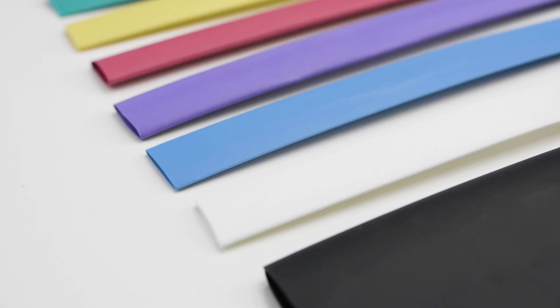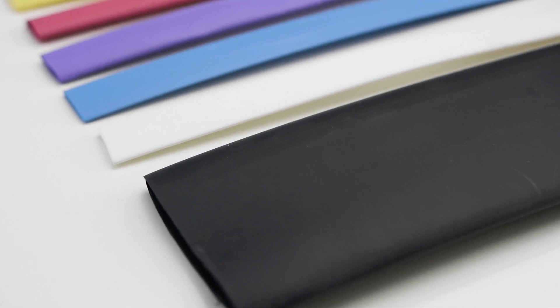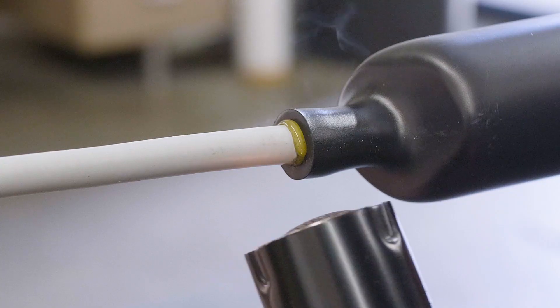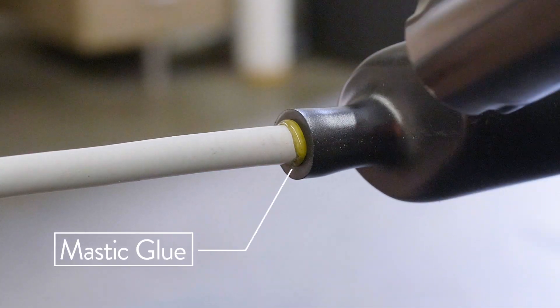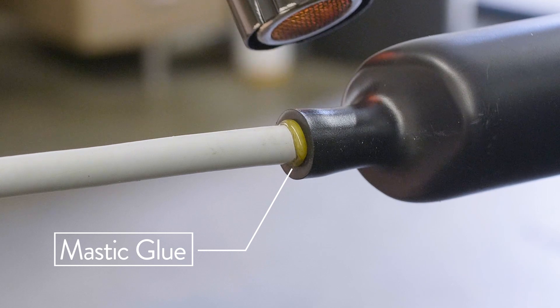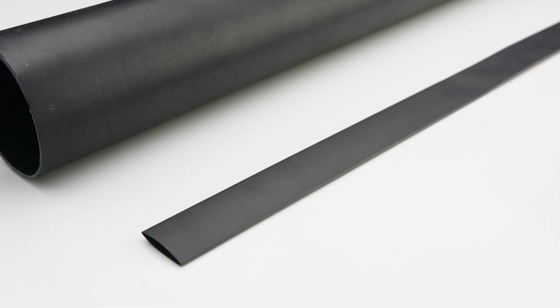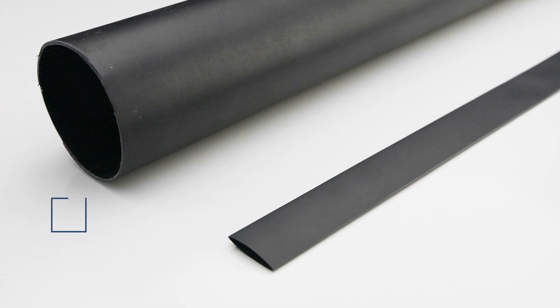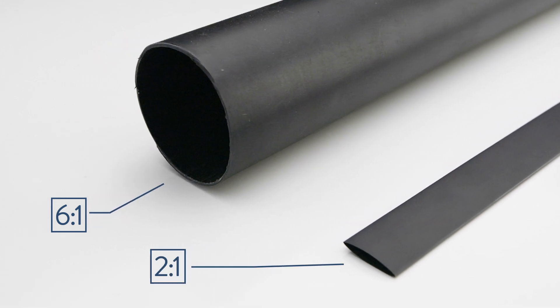Heat shrink is manufactured from different materials which offer different types of resistance to varying chemicals and fuels. Heat shrink is also available with a mastic glue inner lining that adheres to the cable or connector once heated. Heat shrink from Gamma Electronics is available in 6 to 1 to 2 to 1 shrink ratios.